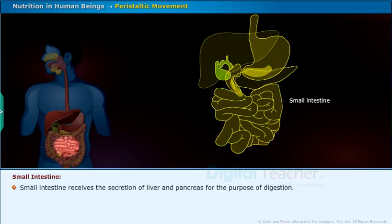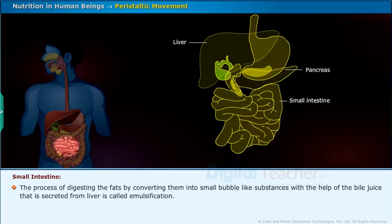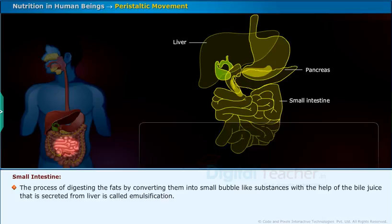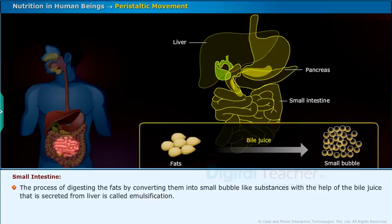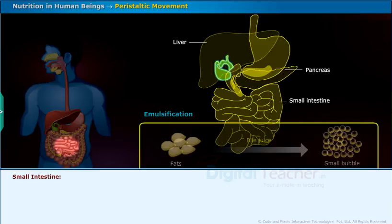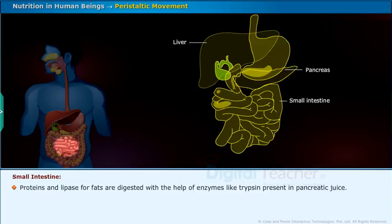The small intestine receives the secretions of the liver and pancreas for the purpose of digestion. The process of digesting fats by converting them into small bubble-like substances with the help of bile juice secreted from the liver is called emulsification. Proteins and fats are also digested with the help of enzymes like trypsin and lipase present in pancreatic juice.